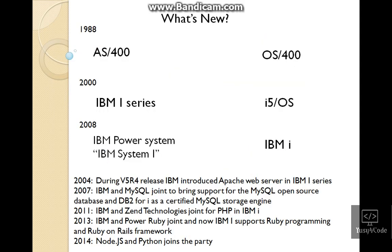Below are some key technology updates that happened along with IBM i. From 2004, IBM was introduced with the Apache web server. From 2007, MySQL became the certified MySQL storage engine in DB2. In 2011, IBM and Zend Technologies joined for PHP and IBM i. In 2013, IBM started supporting Ruby on Rails, and from 2014, Node.js and Python joined the party.